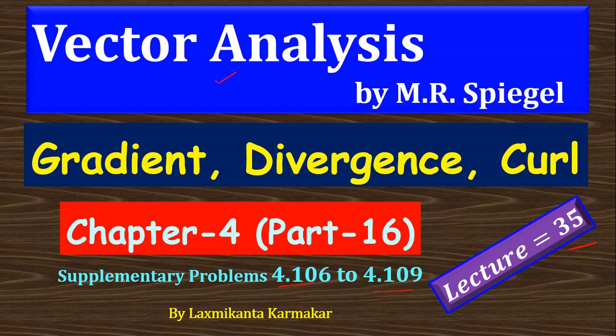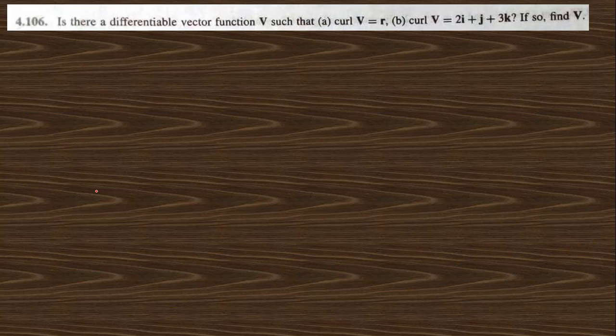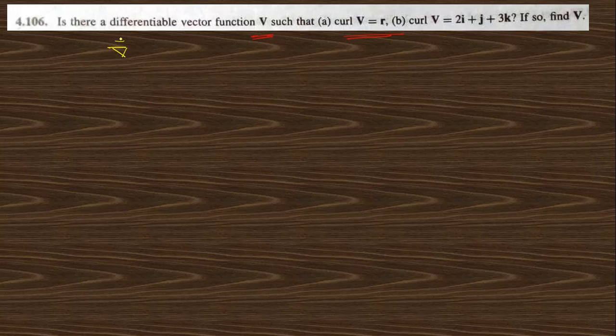Go directly to question 4.106, which says: is there a differential vector V such that curl of V equals R? To solve this problem, you need to know the property that the divergence of curl of any vector must be 0.